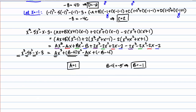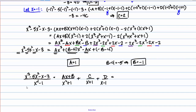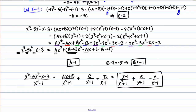Now I have all my coefficients solved for, so I'm ready to write the final answer. Starting from the original rational function and the form of our partial fraction decomposition, I plug in the coefficients I found. Since a equals 1 and b equals negative 1, the first fraction is x minus 1 over x squared plus 1. Then c equals 2, giving plus 2 over x plus 1. And d equals negative 2, giving minus 2 over x minus 1. This is our partial fraction decomposition.